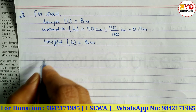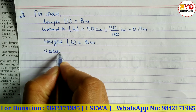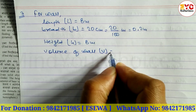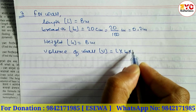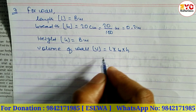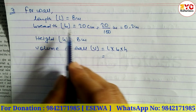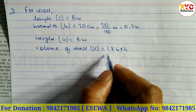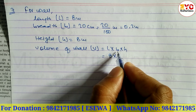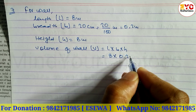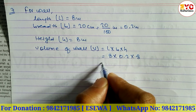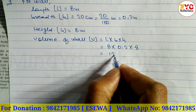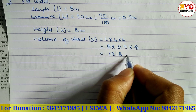Now we have to find the volume of the wall. Volume of wall V = L × B × H. So that is 8 × 0.2 × 8. First 8 × 8 = 64, then 64 × 0.2 = 12.8 meter cube.